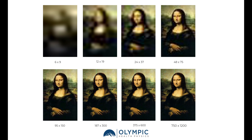In this last example, we can see the effects that matrix size or pixel size also have on resolution. When we have very large pixels or a low matrix, it's very difficult to discern what the objects are within the image. As we increase the matrix size — which is equivalent to decreasing the pixel size — we get more and more detail where we can really see the fine detail in the image.